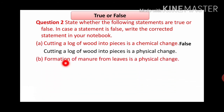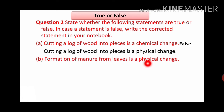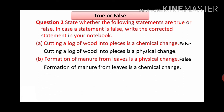Next one: formation of manure from leaves is a physical change. You have already studied about manure and how it is formed in the first chapter. When dead and decaying organisms form manure from leaves, it is false that this is a physical change, because manure is a completely new substance. So the correct answer is: formation of manure from leaves is a chemical change.